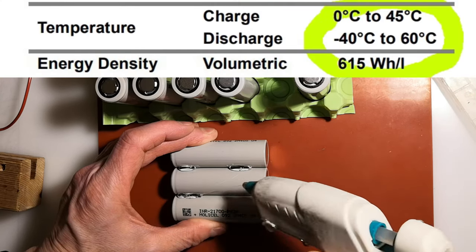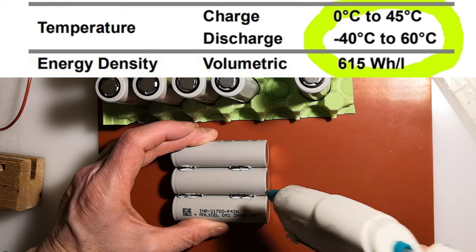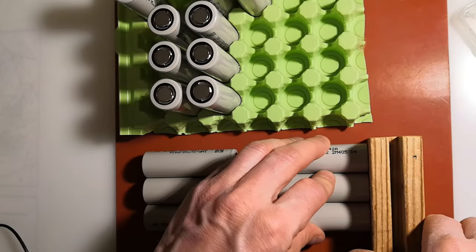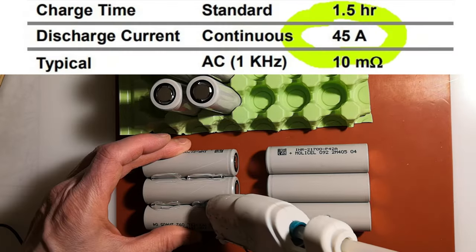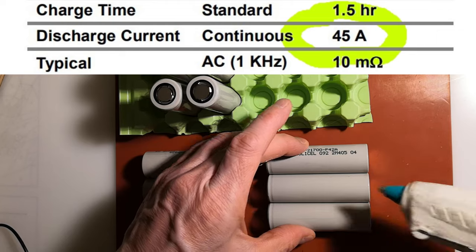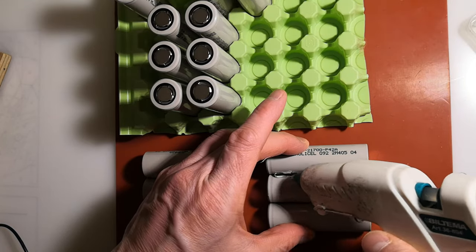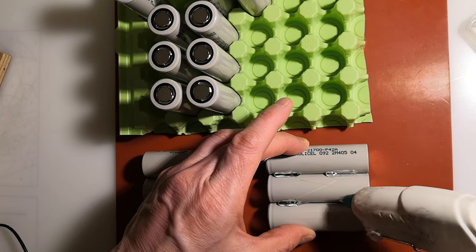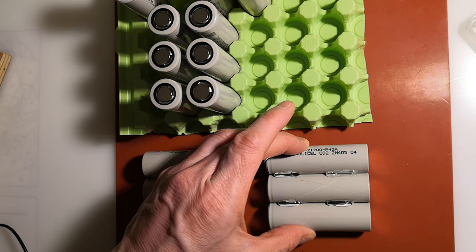These Molesyl cells perform exceptionally well in cold temperatures, even down to minus 40 degrees Celsius. These cells also have good power delivery capability, up to 45 amps continuously. This enhances their cold resistance. My current batteries struggle in temperatures just below freezing, so I need a battery that works well in extreme cold.